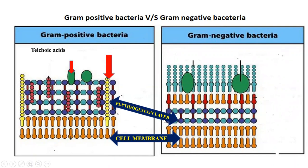The peptidoglycan layer is more prominent in gram positive bacteria — its thickness is 16 to 80 nanometers. In gram negative bacteria, the peptidoglycan layer is much thinner, only about 2 nanometers in size.